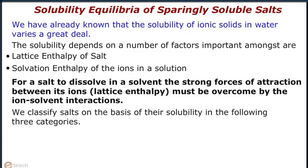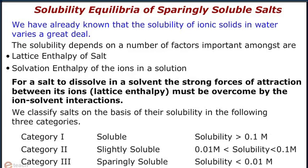We classify salts on the basis of solubility into the following three categories. Category 1 is Soluble, in which solubility is greater than 0.1 molar. Category 2 is Slightly Soluble, in which solubility is greater than 0.01 molar but less than 0.1 molar. Category 3 is Sparingly Soluble, in which solubility is less than 0.01 molar.